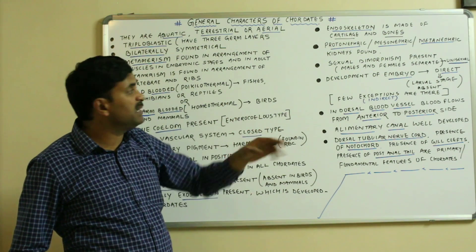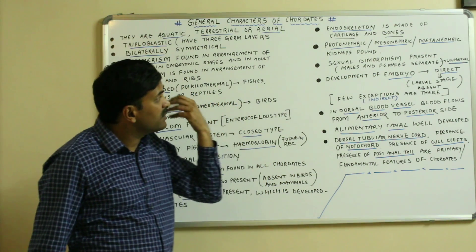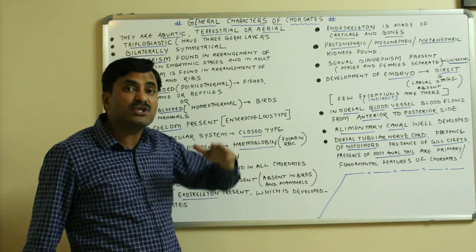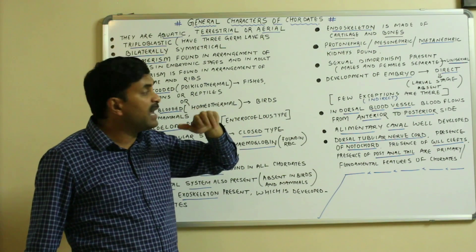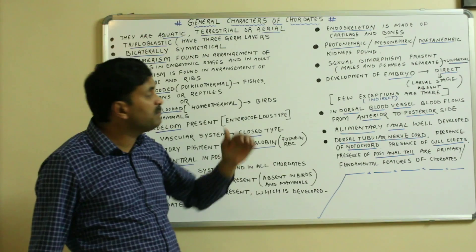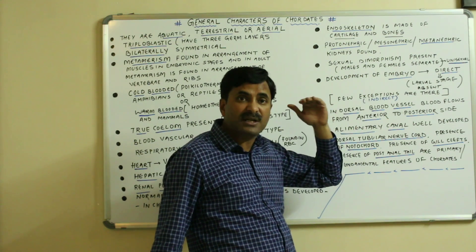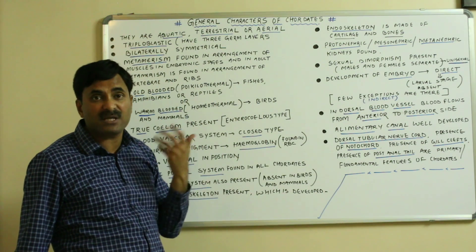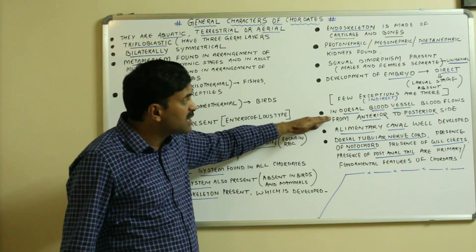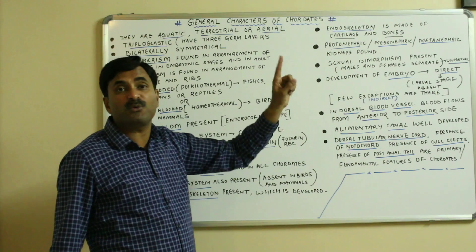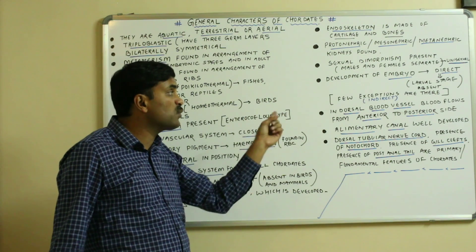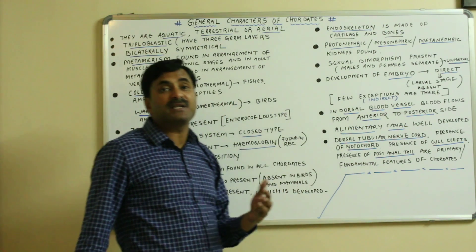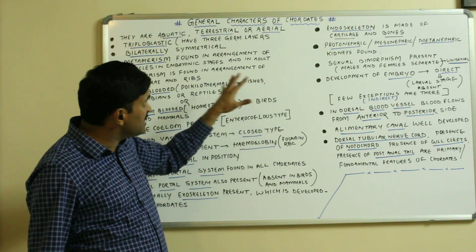Chordates are generally unisexual, meaning males and females are separate — they show sexual dimorphism. Development of the embryo is generally direct, meaning the embryo does not develop into a larva, so larval stage is absent; but in a few chordates, indirect development with larval stages also occurs. In the dorsal blood vessel, blood flows from the anterior to the posterior side. The alimentary canal and digestive glands are very well developed.